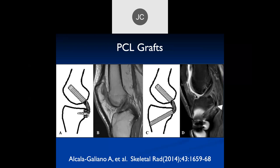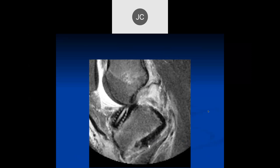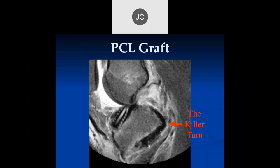As far as grafts, the two major ones are using a hardware construct to attach the graft to the posterior aspect of the tibia versus putting in suture anchors and tunnels on both sides. When you do these tunnels, the weak point of this procedure is right here - what's called the killer turn, where the posterior part of the bone can rub into the graft and produce a graft tear. This is what that killer turn looks like on MR. This patient had a knee dislocation with ACL and PCL tears, had grafts on both, and this shows the killer turn in the PCL graft, which is typically the weak point.